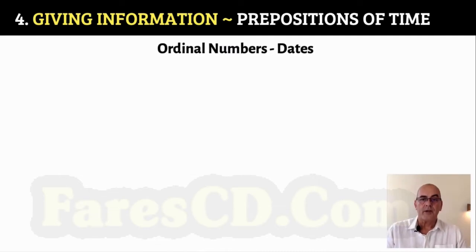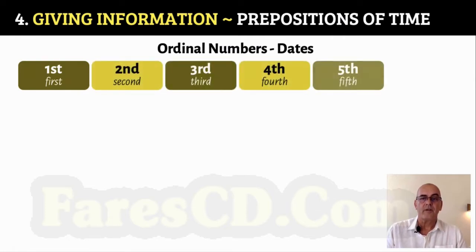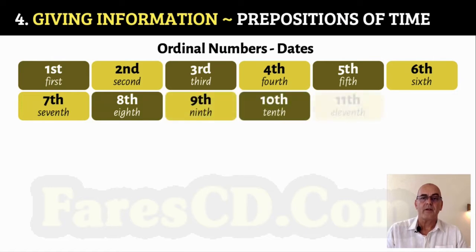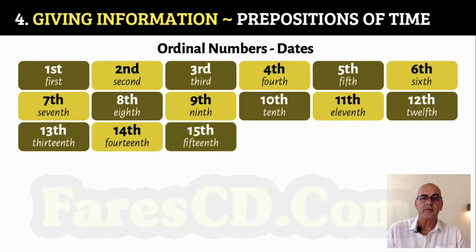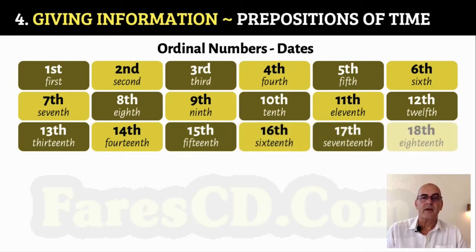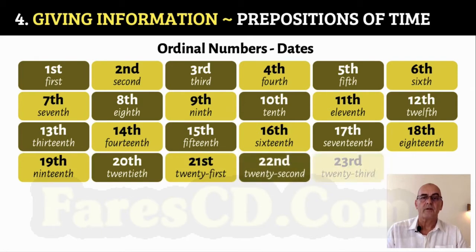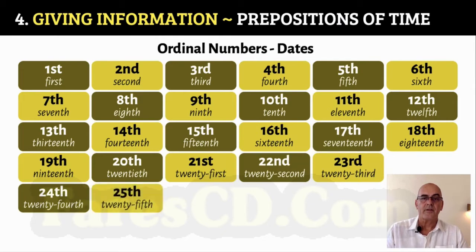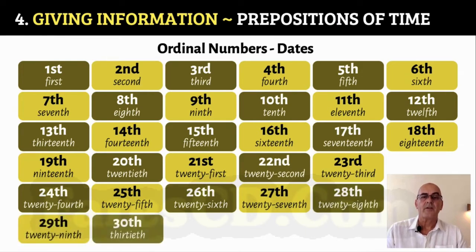Ordinal numbers for dates: 1st, 2nd, 3rd, 4th, 5th, 6th, 7th, 8th, 9th, 10th, 11th, 12th, 13th, 14th, 15th, 16th, 17th, 18th, 19th, 20th, 21st, 22nd, 23rd, 24th, 25th, 26th, 27th, 28th, 29th, 30th, 31st.